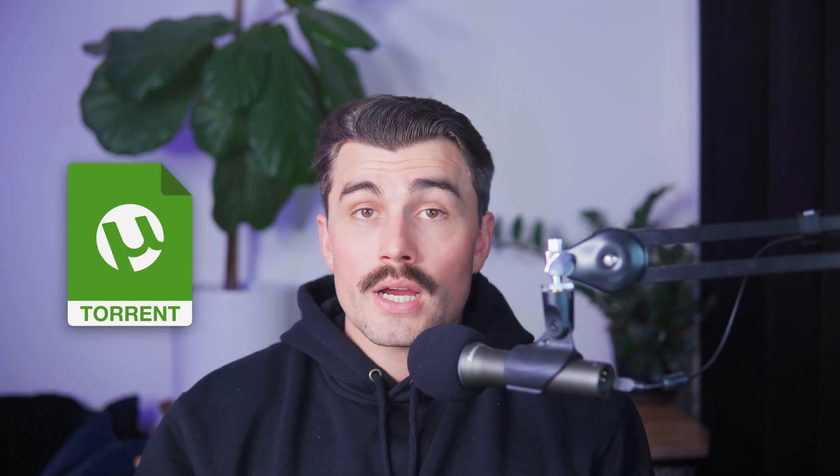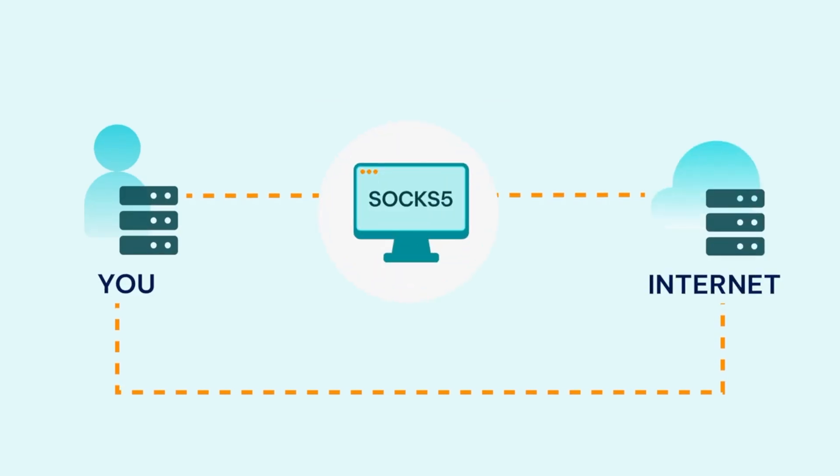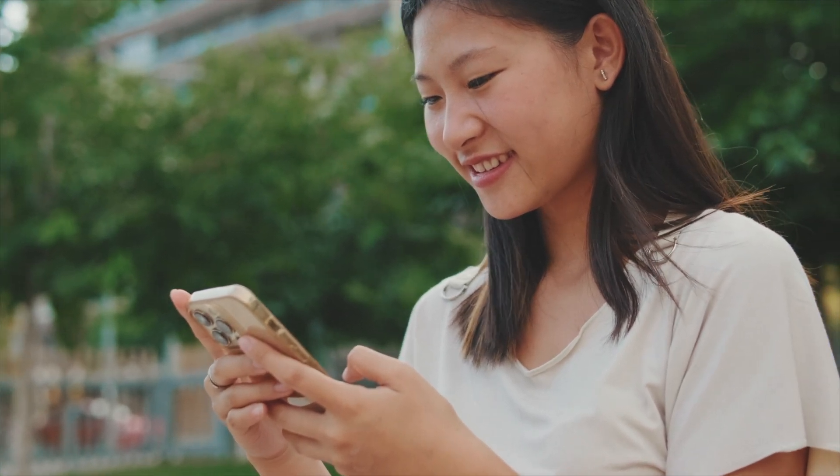Torrenting is another area where IPVanish shines. The inclusion of a SOCKS5 proxy is a game-changer, allowing you to route torrenting traffic through a proxy server to boost download speeds while keeping your IP address hidden. Unlike some VPNs that throttle bandwidth for peer-to-peer activities, IPVanish imposes no such restrictions. However, streaming performance is a mixed bag — while it reliably accesses Netflix US and BBC iPlayer, it struggles with Disney+, Hulu, and Amazon Prime Video, and lacks specialized streaming servers.